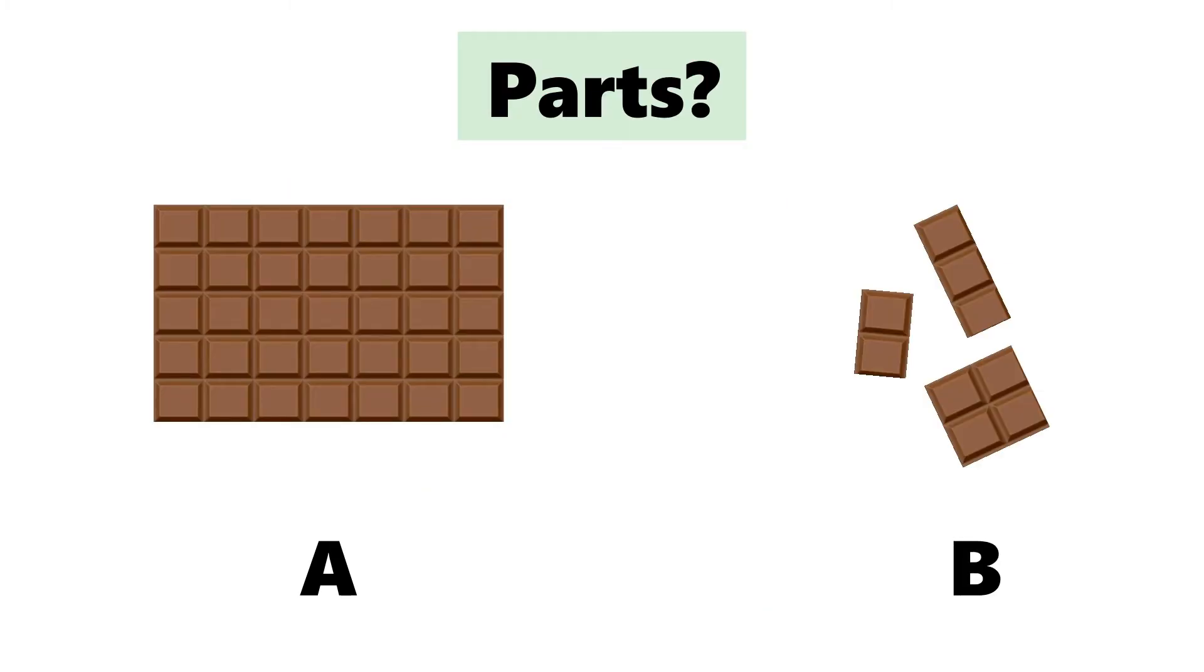Which are parts? That's right! B shows parts. They are parts of a chocolate bar.